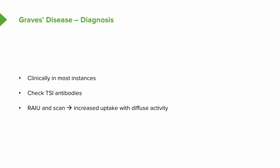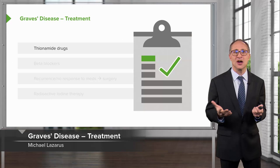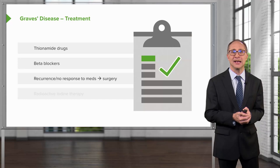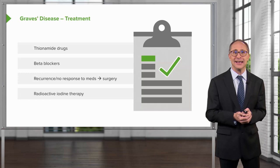The treatment of Graves' disease is a stepwise approach, usually starting with thioamide drugs, followed by beta blockers to control heart rate. If the thyrotoxicosis recurs, or if there are any compressive symptoms of the thyroid gland, surgery is considered. In the absence of a response to medications, one can also consider radioactive iodine ablation therapy. Thionamide drugs can be used consecutively for up to two years.